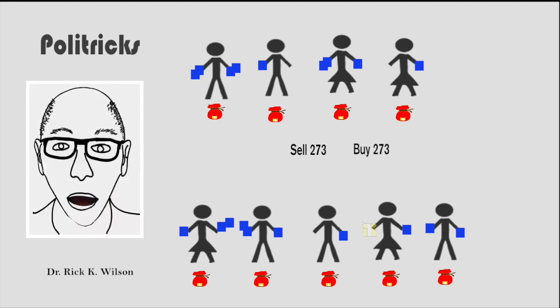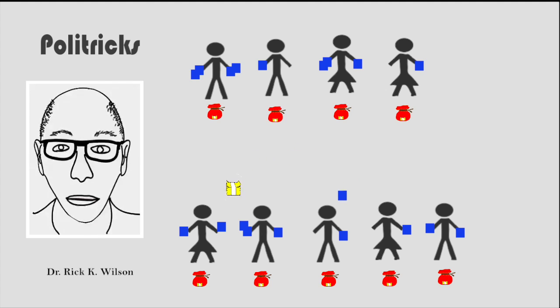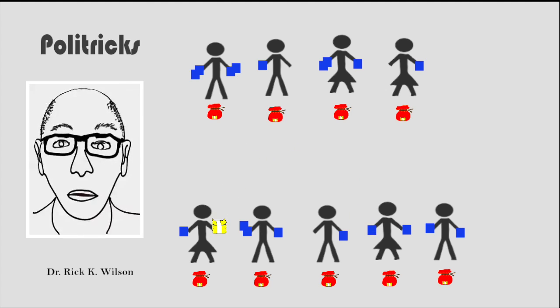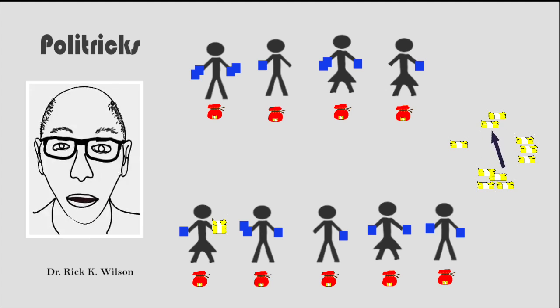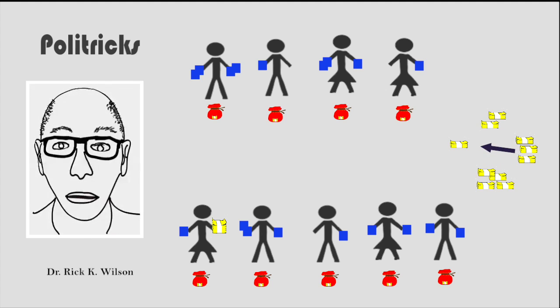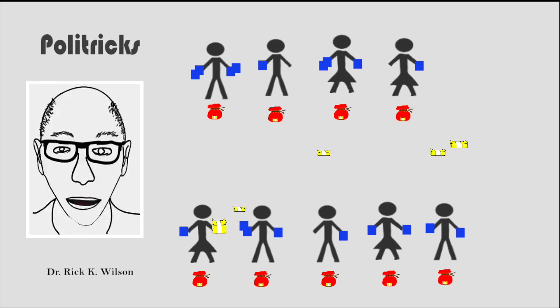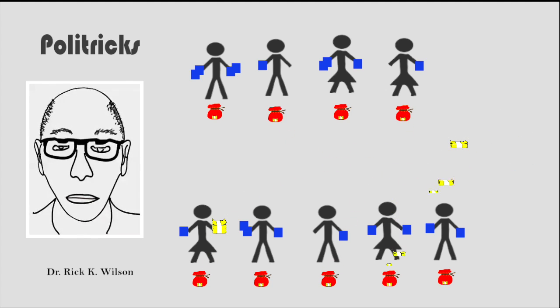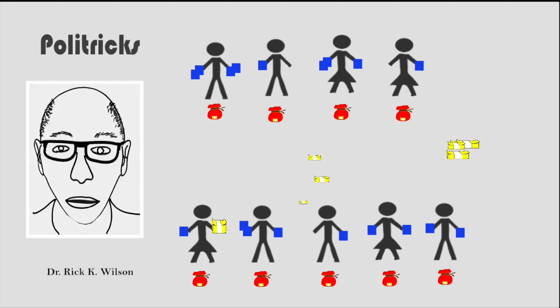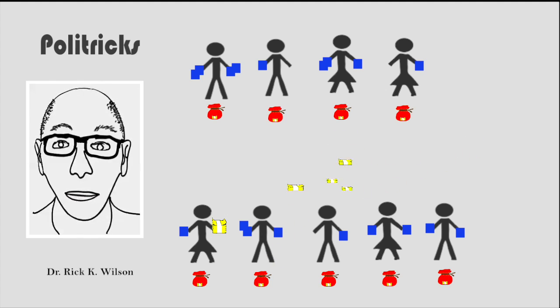If a buyer and seller agree on a price, the trade takes place. At the end of the trading period, a dividend is paid for each share the person now holds. The dividend's worth is randomly chosen from four different values to create a little uncertainty. The asset's worth the most at the beginning when it's due to generate 15 periods worth of dividends, and at the end of the 15th period shares are worth nothing.